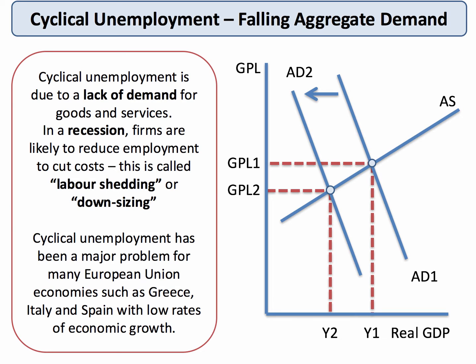The best way to show cyclical unemployment on a diagram is to show an inward shift of aggregate demand, as shown in our diagram. That causes a contraction of aggregate supply and a fall in the level of real national output.